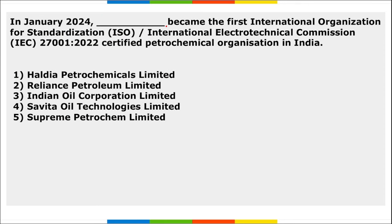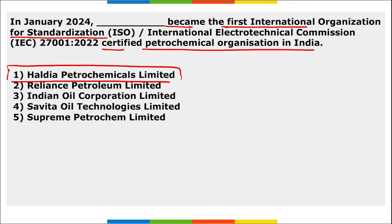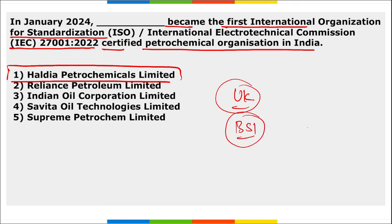Haldia Petrochemicals Limited became the first ISO/IEC 27001:2022 certified petrochemical organization in India. This certification was awarded by UK-based certification body BSI — British Standards Institution — in a ceremony held in Kolkata, West Bengal.